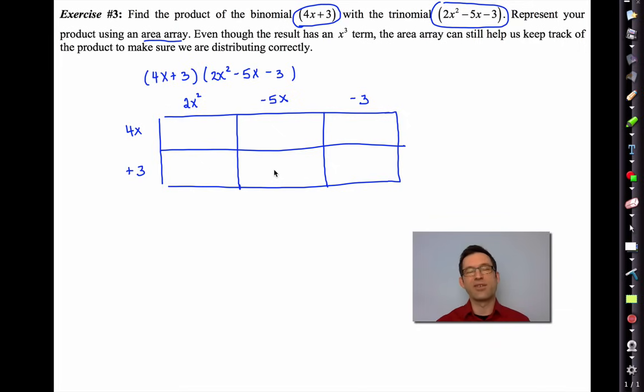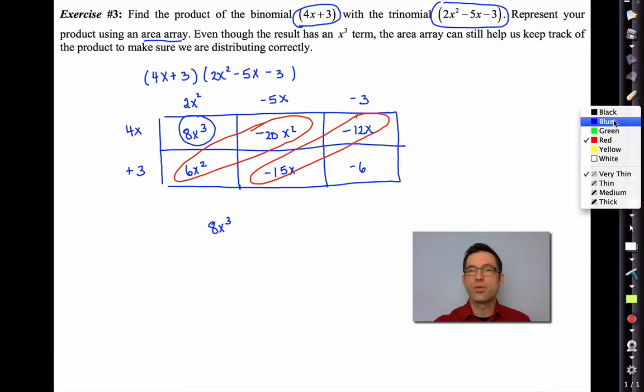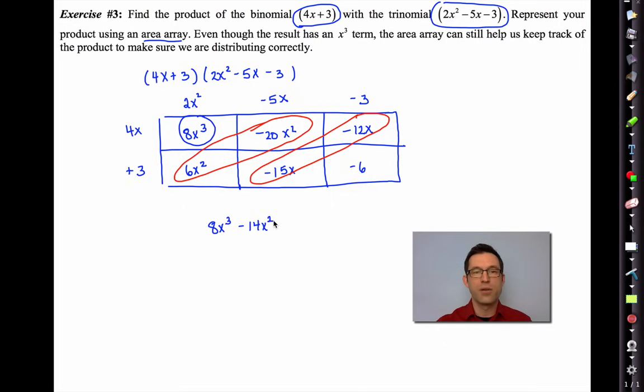On this side, on the other hand, we have three terms. We have a 2x². I'm going to attach that negative to the 5x and that negative to the 3. But now what we have is we have six rectangles. Now they don't all have the same area the way that I've drawn them, but we don't really need them to be scaled correctly. We just want to be able to go 4x times 2x² is 8x³. 4x times negative 5x would be -20x². 4x times negative 3 would be -12x. We can now do this row. 3 times 2x² would be 6x². 3 times negative 5 would be -15x. And 3 times negative 3 would be -6.